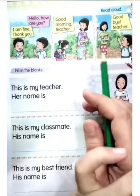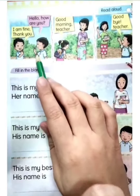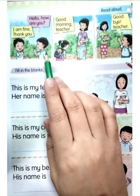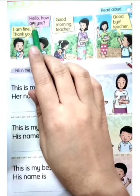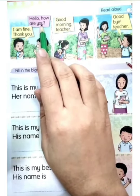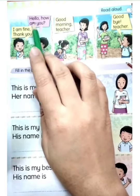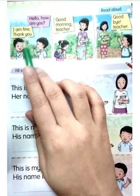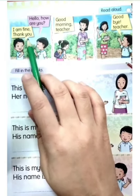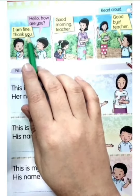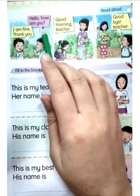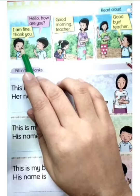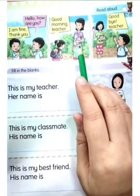Read aloud, just follow me. Look at the first speech. There are two children. Look at the first one — he says, 'Hello, how are you?' Once again: hello, how are you. And then he answered, 'I am fine, thank you.' Say together: I am fine, thank you. So when someone says 'how are you' to you, you say 'I'm fine, thank you.' Very good.